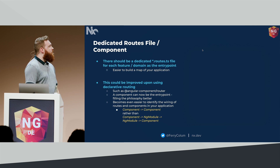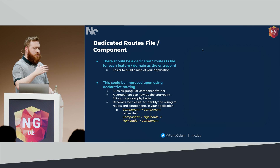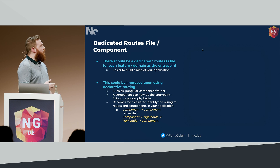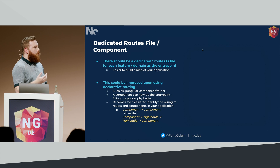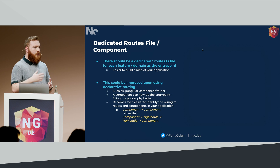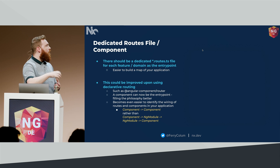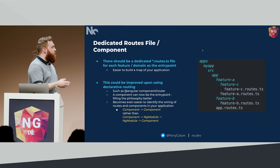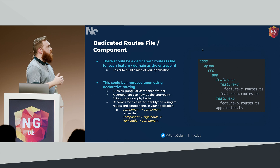Moving on to the dedicated routes file: every feature domain should have an entry point, which is your routes file or component. It's easy then to see how a user might route across our application. It could be improved if we use something like the Angular component router, where it's a declarative router — we create a component and use tags to set up how it looks, filling the philosophy better where a component controls all our components. We can see a directory structure here of how that might look, with each feature folder having its routes file created right at the top level.